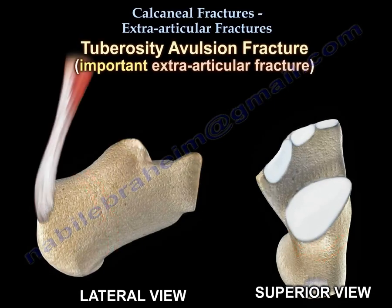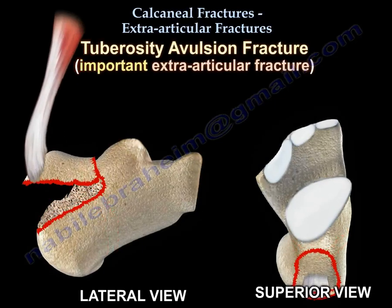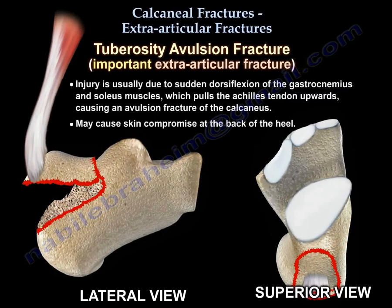The tuberosity avulsion fracture is an important extraarticular fracture. The injury is usually due to sudden dorsiflexion of the gastrocnemius and soleus muscles, which pulls the Achilles tendon upwards causing an avulsion fracture of the calcaneus. This injury may cause skin compromise at the back of the heel.